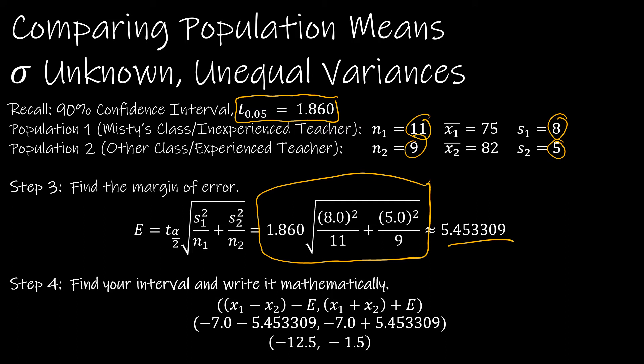Step 4, find your interval, write it mathematically. Sometimes you'll see me show lower limit and then negative 7 minus 5.45 and then upper limit, and it's totally fine to do it that way. As long as you recall at the end, you're going to want interval notation, which is in this case, negative 12.5 to negative 1.5.